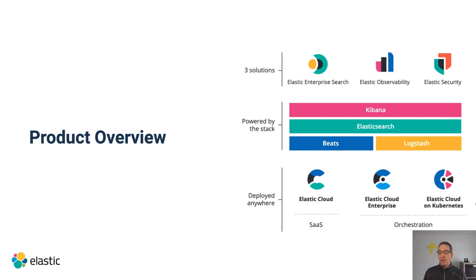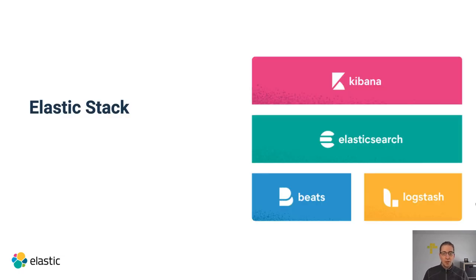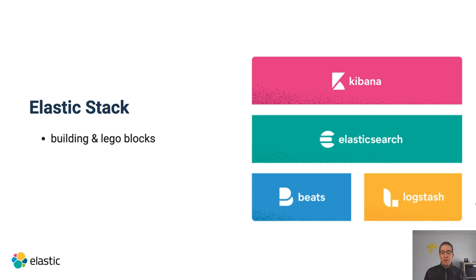Elastic as a company has a high interest in keeping services secure because we are running Elasticsearch as a service ourselves using Elastic Cloud. We really want to make sure that all of those services, including Elasticsearch, Beats, Logstash, and Kibana are running as secure as possible. The stack itself consists of four different pieces: Kibana being the management and monitoring UI, Elasticsearch being the distributed system storing and querying all the data, and you can use Beats and Logstash to ingest data. Elasticsearch and Beats are both using SecComp features right now within the stack.